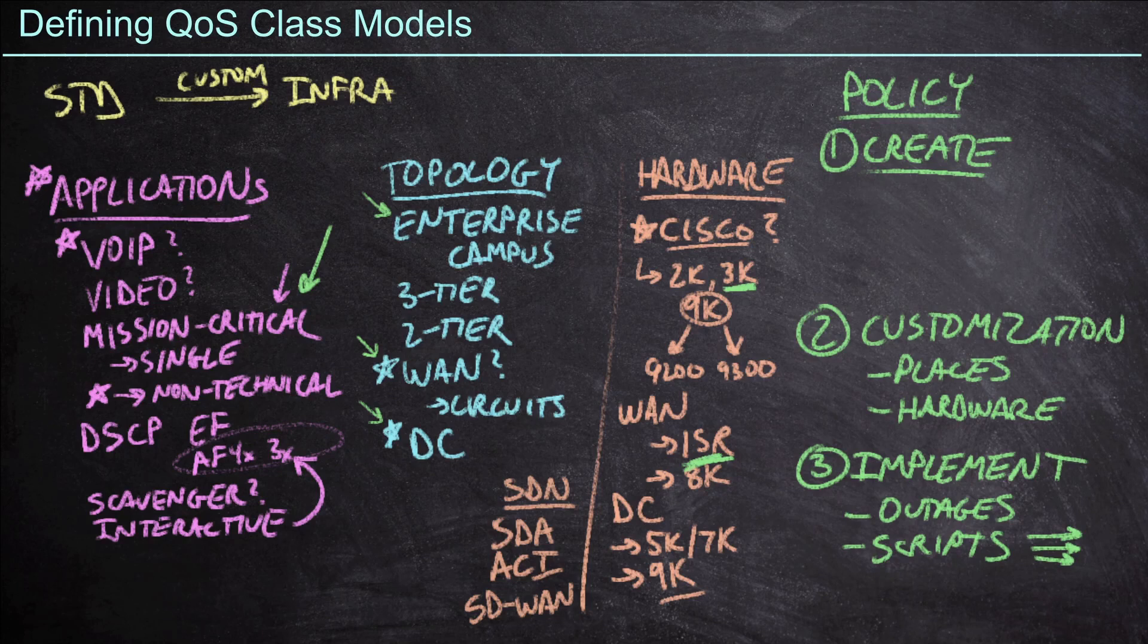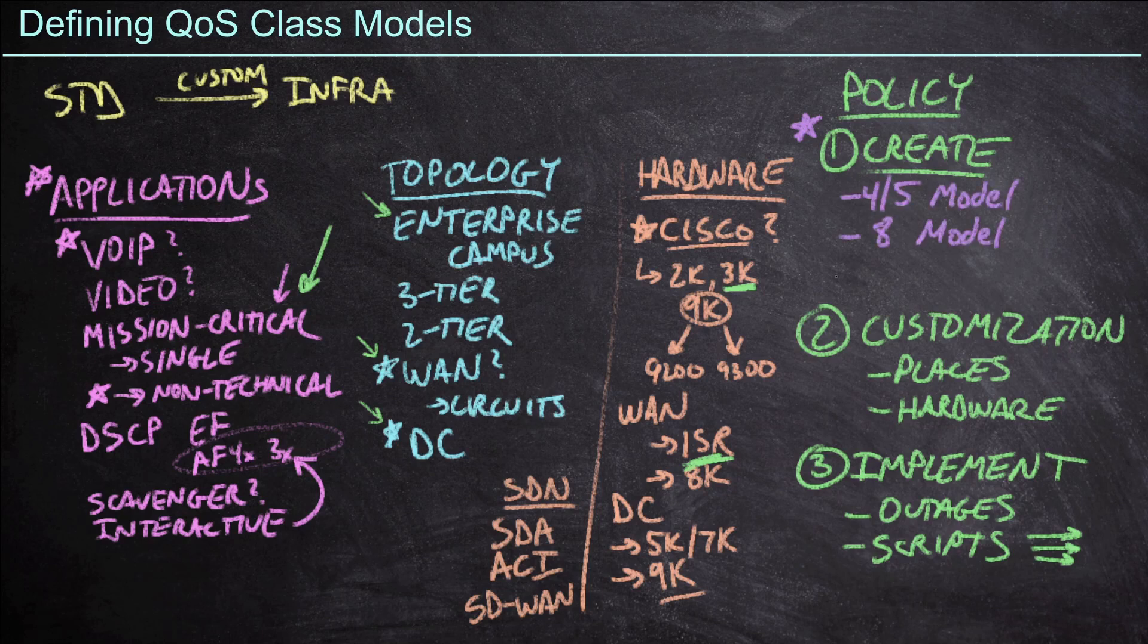Now, in this particular skill, we're going to be focused on step number one here, which is the create part of our policy. We want to be able to create a policy by the end of this conversation. And we do need a starting point. And fortunately, Cisco gives us several starting points, which are called out on the CLCOR Blueprint. Specifically, they are the 4.5 model, the 8 model, and the 11 model. And the 11 model is also known as the baseline model.